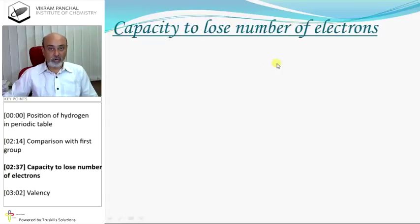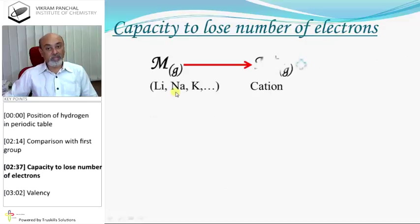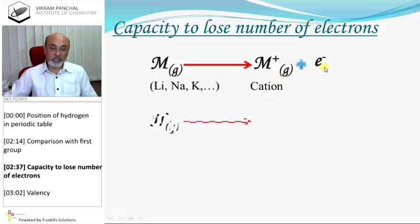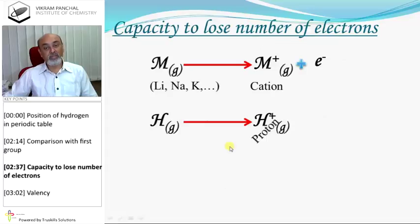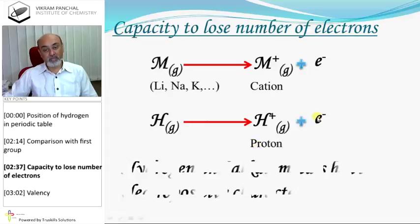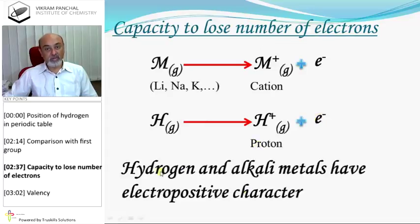Capacity to lose electrons: alkali metals lose one electron because they have only one electron in the outermost shell. Similarly, hydrogen can also release one electron. That is why hydrogen and alkali metals both have electropositive character.